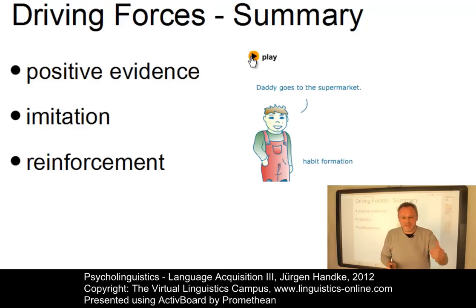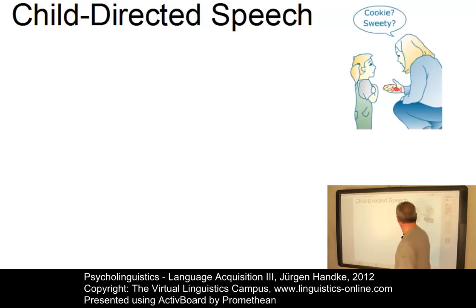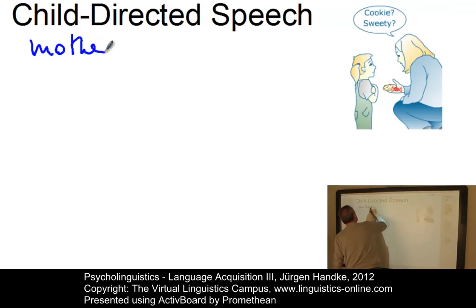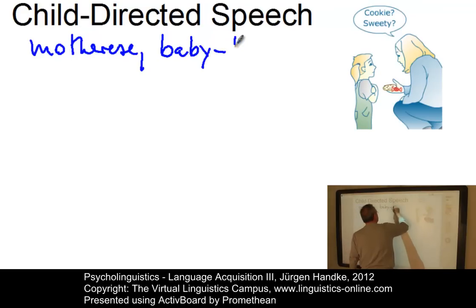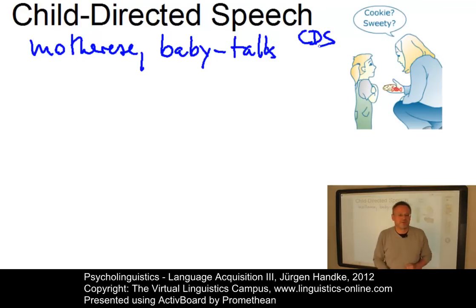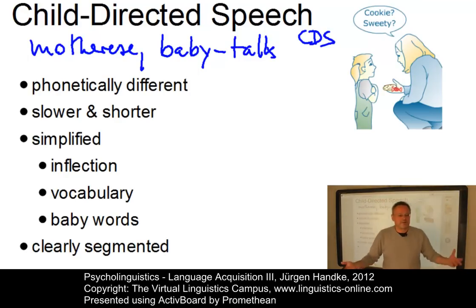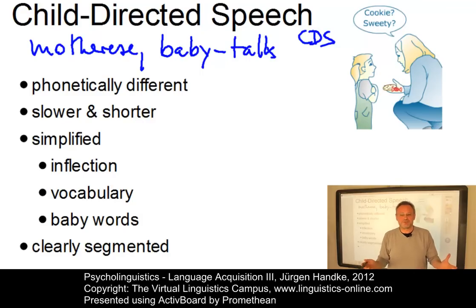Could it perhaps be that the way we address our children is the key for language acquisition? Parents and caregivers all over the world modify their speech when talking to children. This special way of talking was originally called Motherese or Baby Talk, but is now called Child-Directed Speech — CDS — because it is not restricted to mothers. One phonetic feature is labialization: as soon as we address young children, we start rounding our lips.